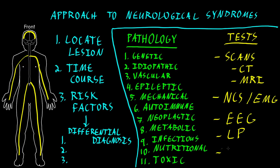Lastly, sometimes we need to take a small piece of tissue and send it to the laboratory — we call that a biopsy. For neurological syndromes, a biopsy of skeletal muscle, a nerve, or sometimes even the brain can be helpful in certain situations.